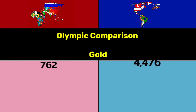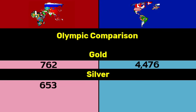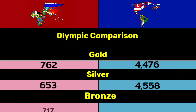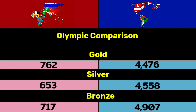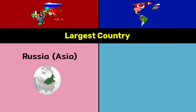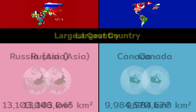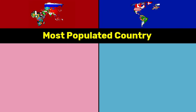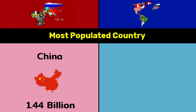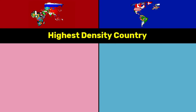Gold medals: 762 vs 4,476. Silver: 653 vs 4,558. Bronze: 717 vs 4,907. Largest country by area: Asian part of Russia at 13.103 million square kilometers vs Canada at more than 9.9 million square kilometers. Most populated country: China at 1.4 billion vs United States at 334 million.